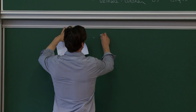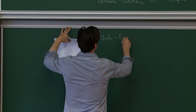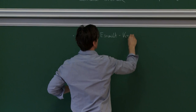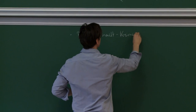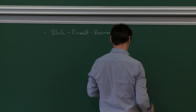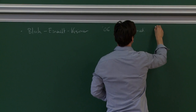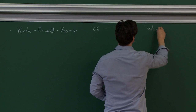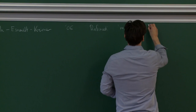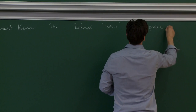Another important contribution is a paper by Bloch, Esnault and Kreimer in 2006, who defined what they called the motive of a certain family of graphs in this theory called primitive log-divergent graphs in phi-4 in four dimensions.